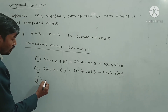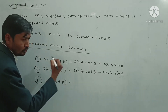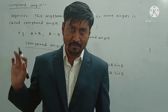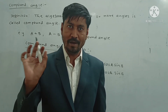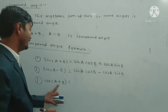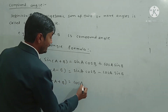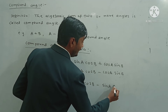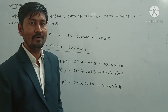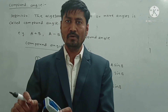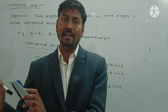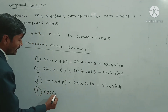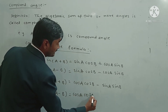The third formula is cos(A+B). Cos(A+B) is equal to cos A cos B minus sin A sin B. If the sign inside is plus, then in the expansion it becomes minus. The fourth formula is cos(A-B), which equals cos A cos B plus sin A sin B. If the sign inside is minus, then in the expansion it becomes plus.